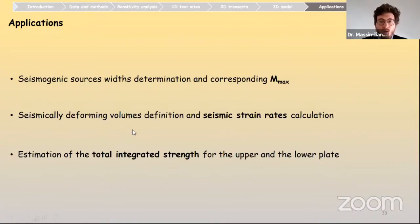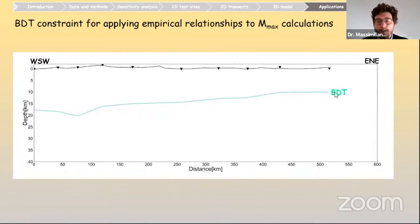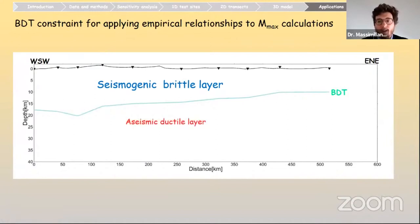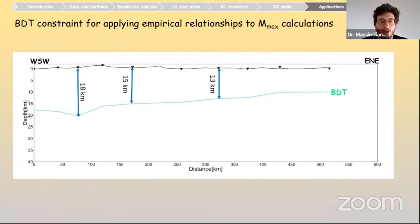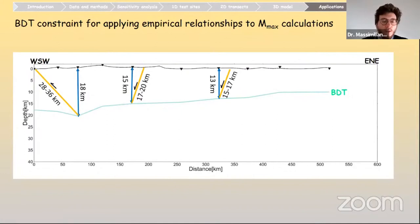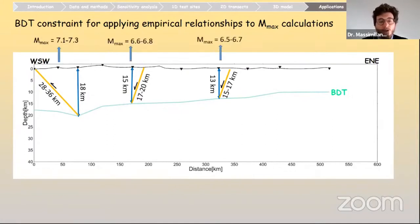Other potential applications include: using the BDT constraint for calculation of seismic strain rate with better-defined seismically deforming volumes, or using modeling results to calculate the total integrated strength for the upper and lower plate. For the maximum magnitude exercise: if we have a varying BDT, above it we have the seismogenic brittle layer and below it aseismic ductile deformation. Variations of the BDT imply variations of the thickness of the seismogenic layer. Adding information on the main seismogenic sources, we can calculate the width and then the maximum expected magnitude for these sources in an independent way.